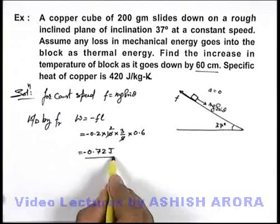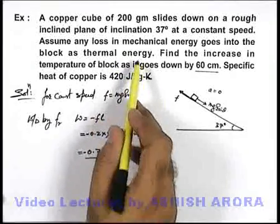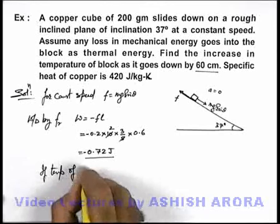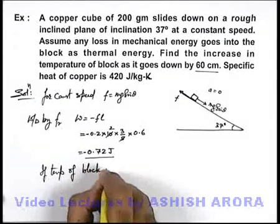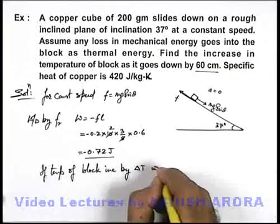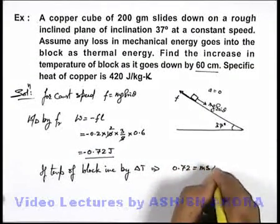This entire amount of work is absorbed by the block as thermal energy. If the temperature of the block increases by ΔT, we can write 0.72 = msΔT.